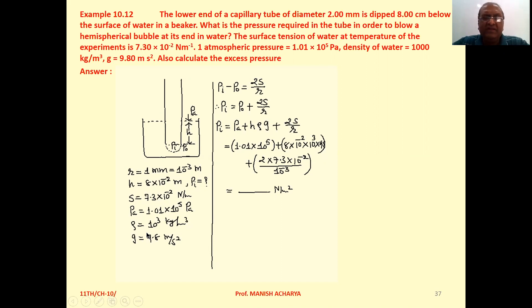Density of the liquid is 10³ kg/m³. g is 9.8 m/s². These quantities are given to you.